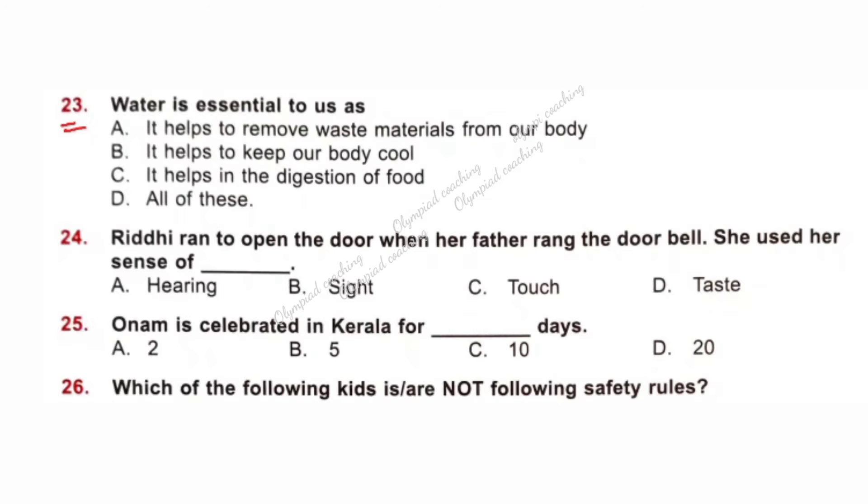Question number 23. Water is essential to us as: Option A, it helps to remove waste material from our body. Option B, it helps to keep our body cool. Option C, it helps in the digestion of food. All of these are essential to us. Option D is correct. Question number 24. Rithi ran to open the door when her father rang the doorbell. She used her sense of? Option A is correct: Hearing. Question number 25. Onam is celebrated in Kerala for dash days. Option C is correct: For 10 days.